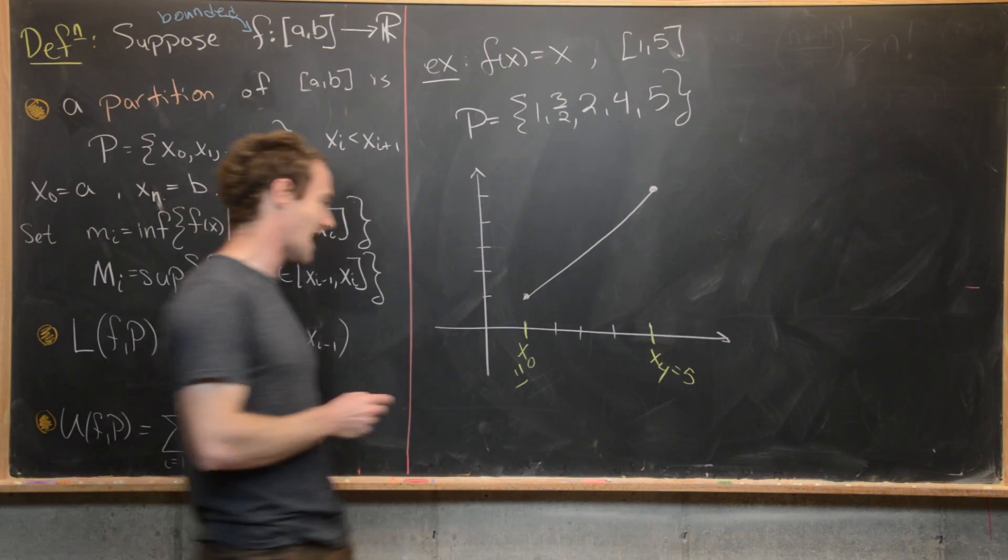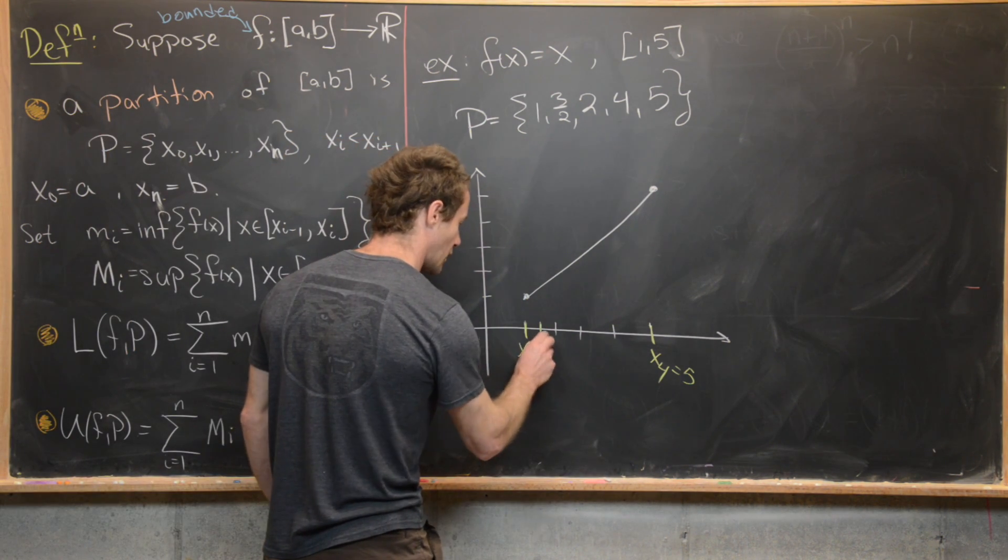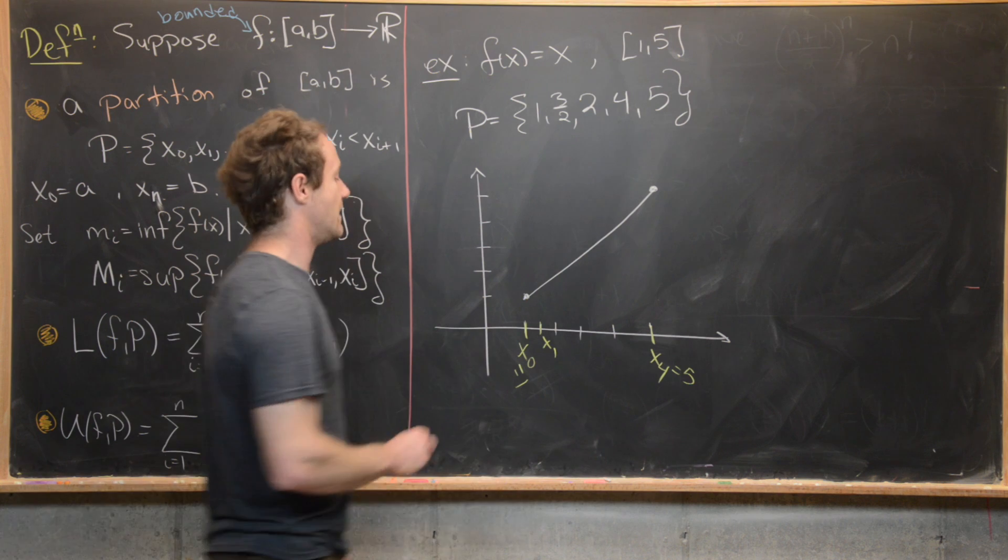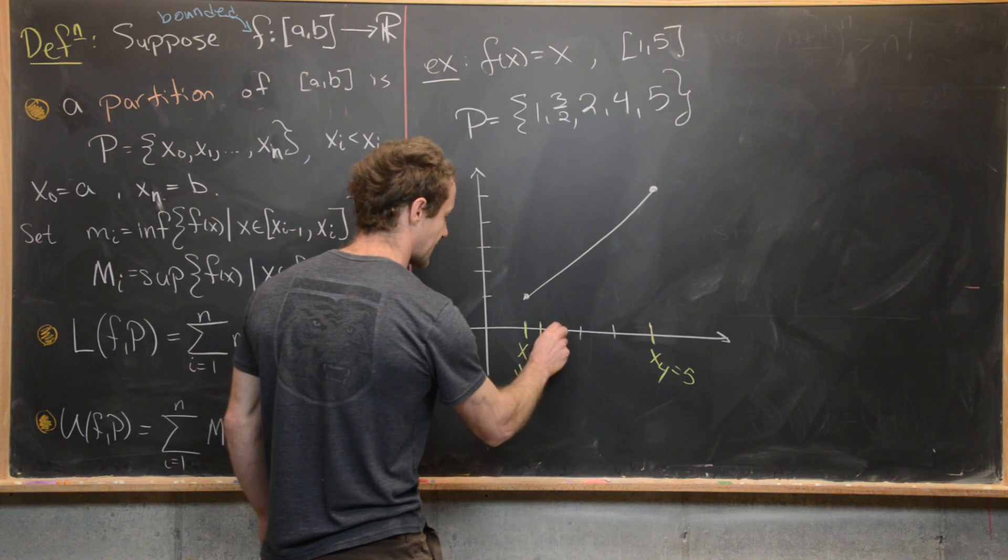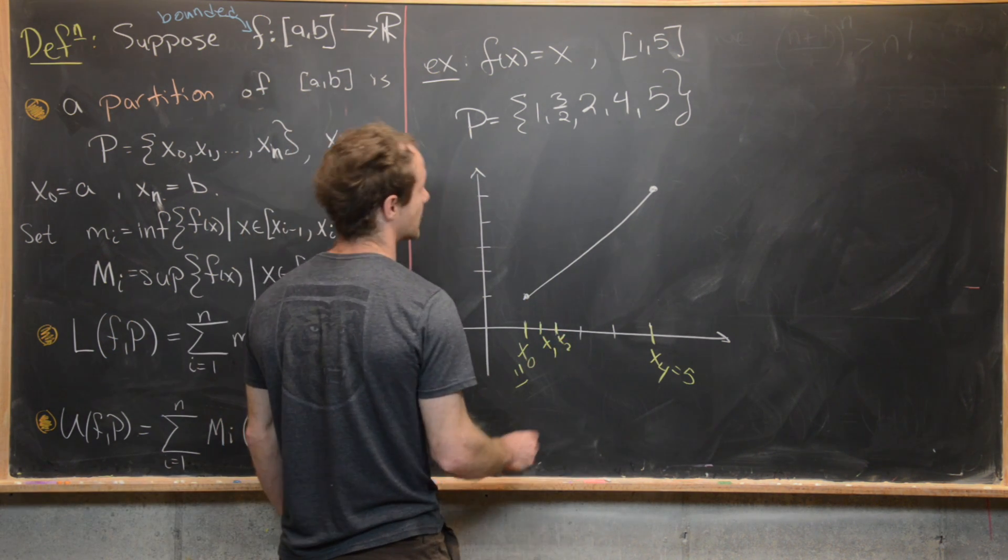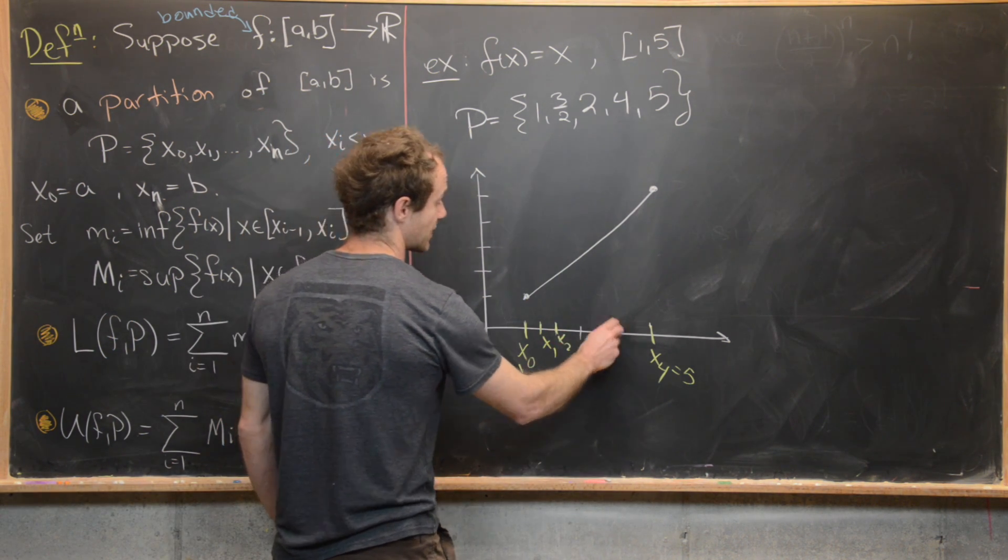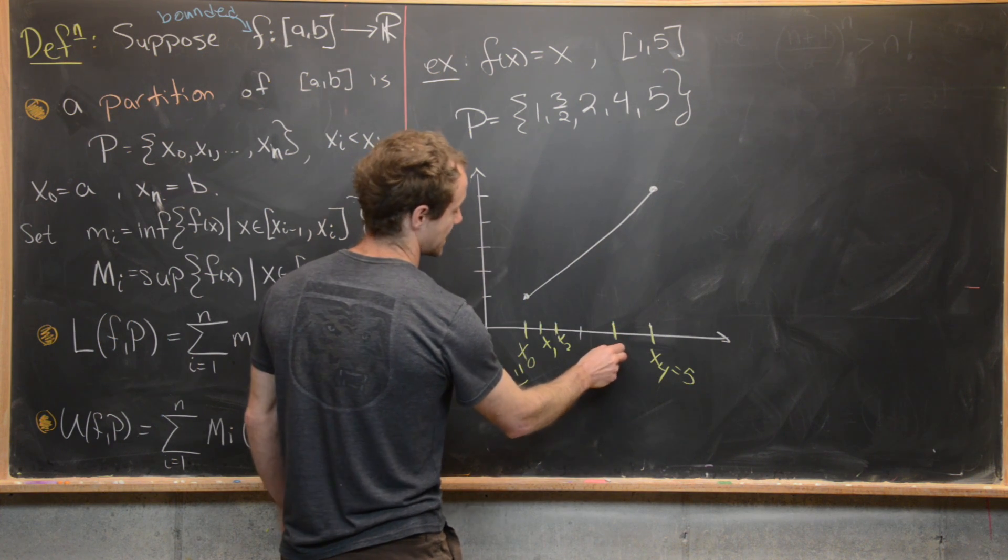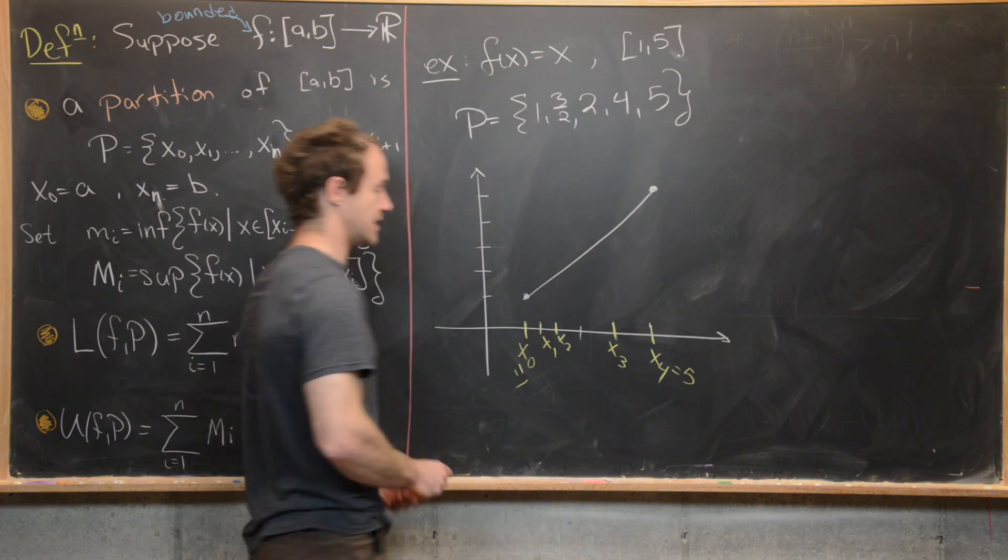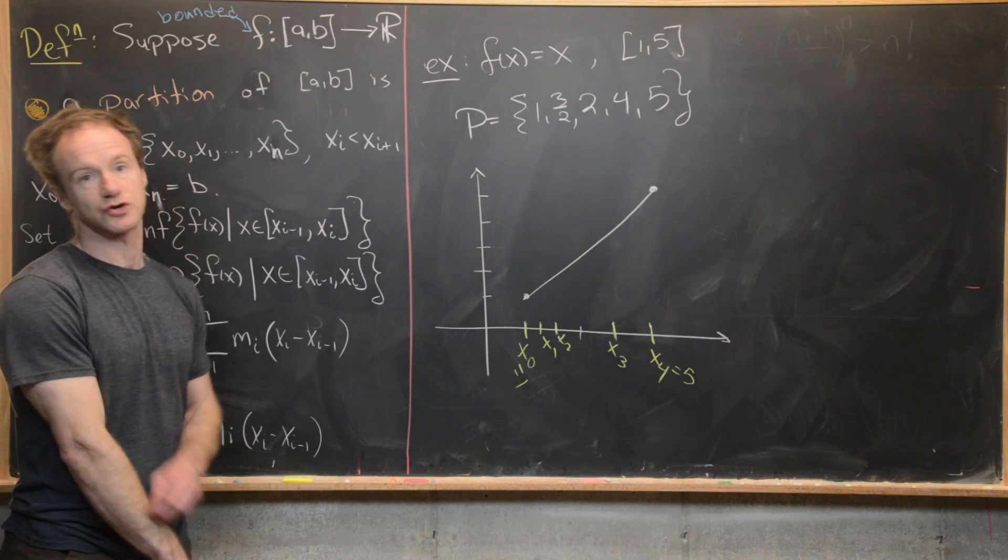And so next is 3/2. So that'll be x_1, which is right here. And then 2 is right after that. So that'll be x_2, which is right here. And then we're skipping 3. 4 is out here. So this is our x_3. So this is the kind of picture we have.